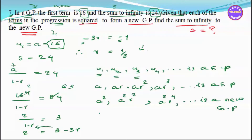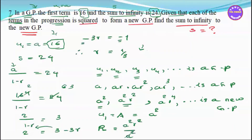For the new GP, each term equals the original term squared, so the new first term is A squared. The new common ratio is R squared. The sum to infinity formula for the new GP is S2 equals A squared divided by (1 minus R squared).